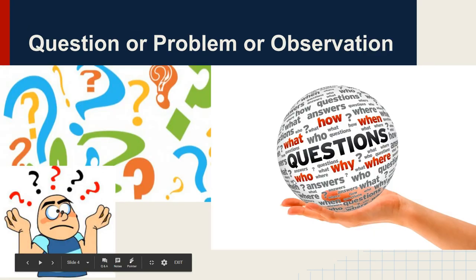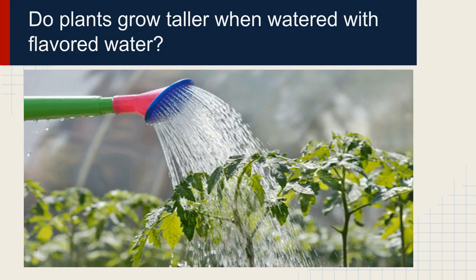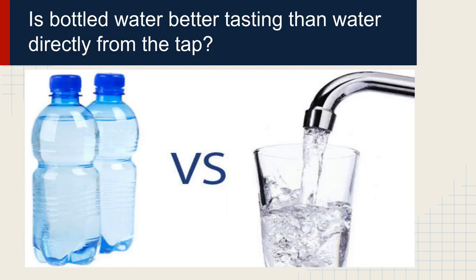We'll get to examples of that in a second. So we start with some kind of a question or a problem or an observation. For example, a question: do plants grow taller when watered with flavored water? That would be a question that we could run a controlled experiment on.